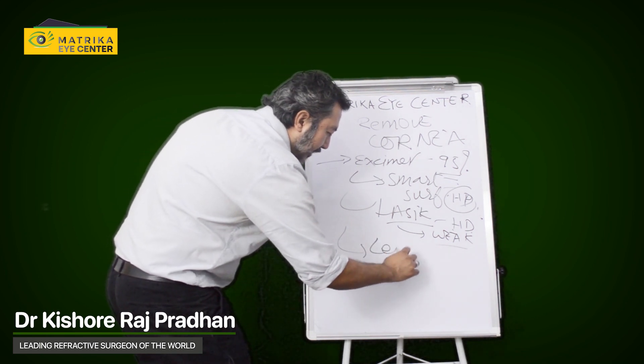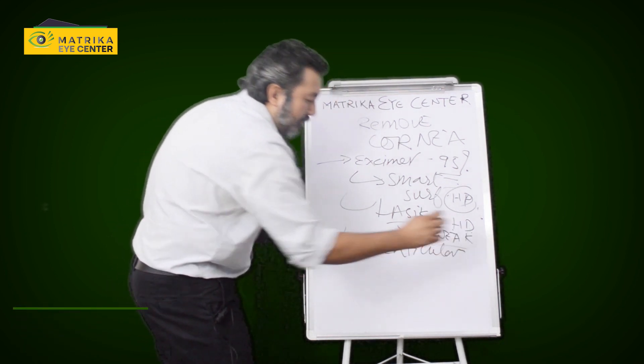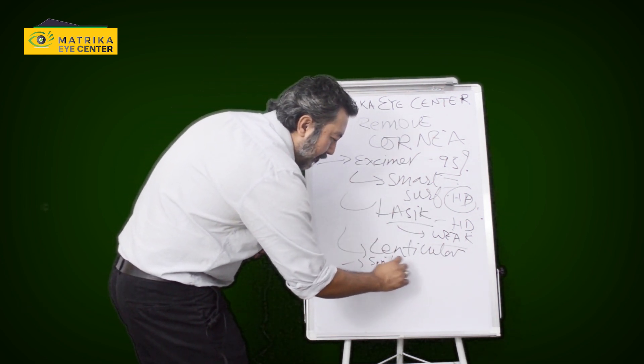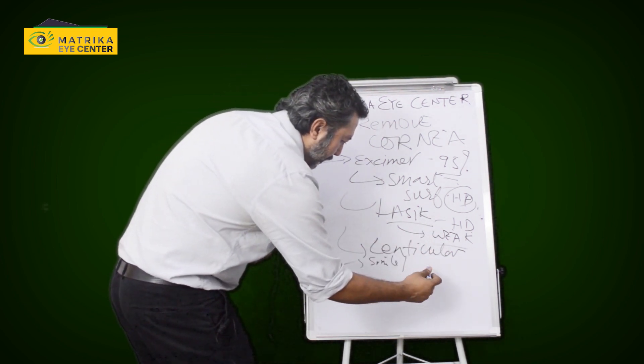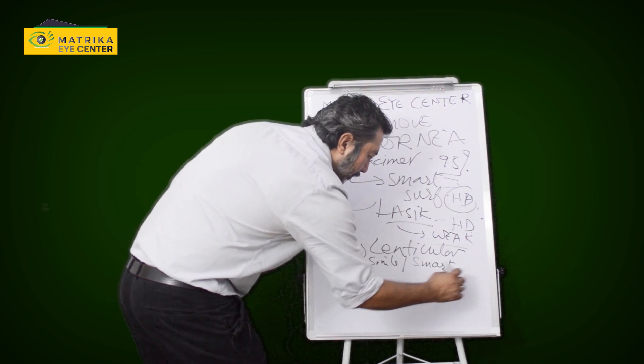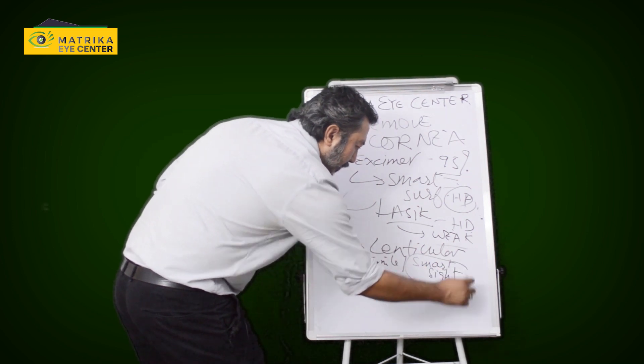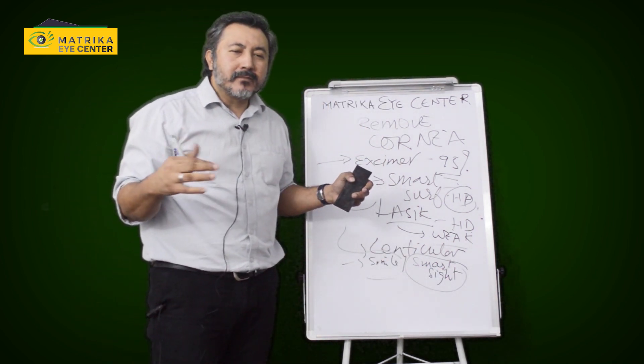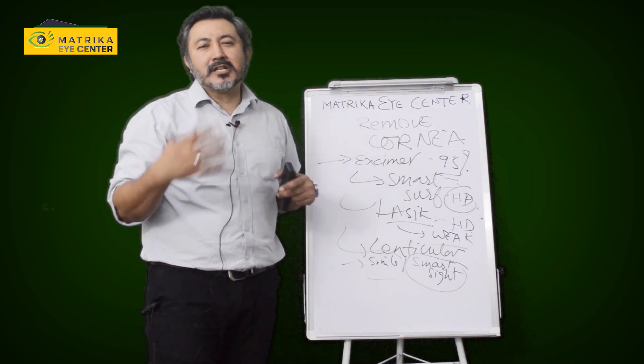Then you have lenticular extractions from the cornea. In the Zeiss, it is called Smile. And for the Schwind that I use, it's called SmartSight. So Smile is an okay procedure. It keeps the cornea strong. The cornea is not very dry. But the visual recovery is very, very slow.